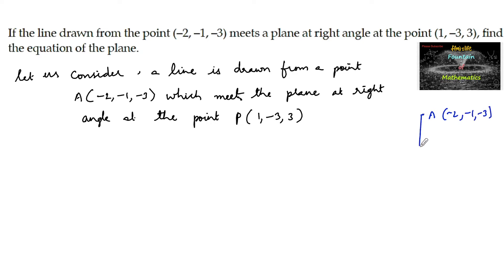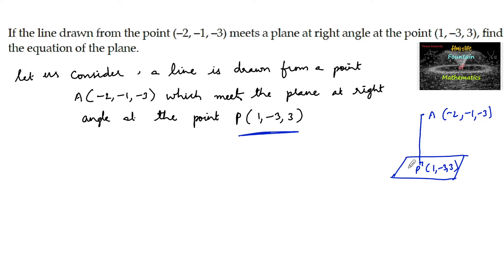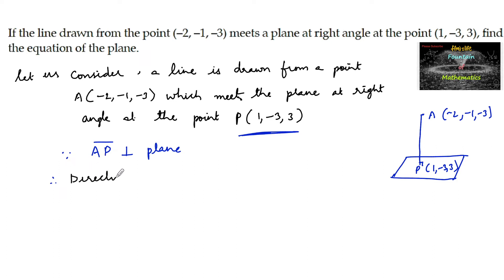A line is drawn from point A which meets the plane P at right angle, which is perpendicular, and the point P is (1, -3, 3). So clearly this point is on the plane. We can also observe that the direction ratios of the line AP are perpendicular to the plane, so AP is perpendicular to the plane.